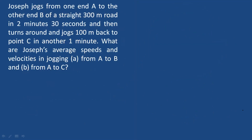Next question: Joseph jogs from one end A to the other end B of a straight 300-meter road in 2 minutes and 30 seconds. He then turns around and jogs 100 meters back to point C in another one minute. What are Joseph's average speed and average velocity in jogging from A to B, and from A to C?